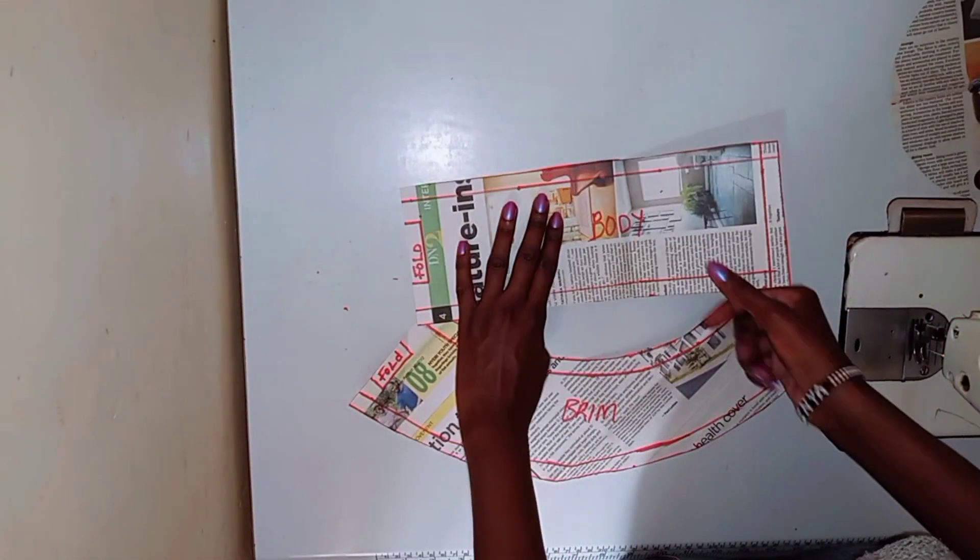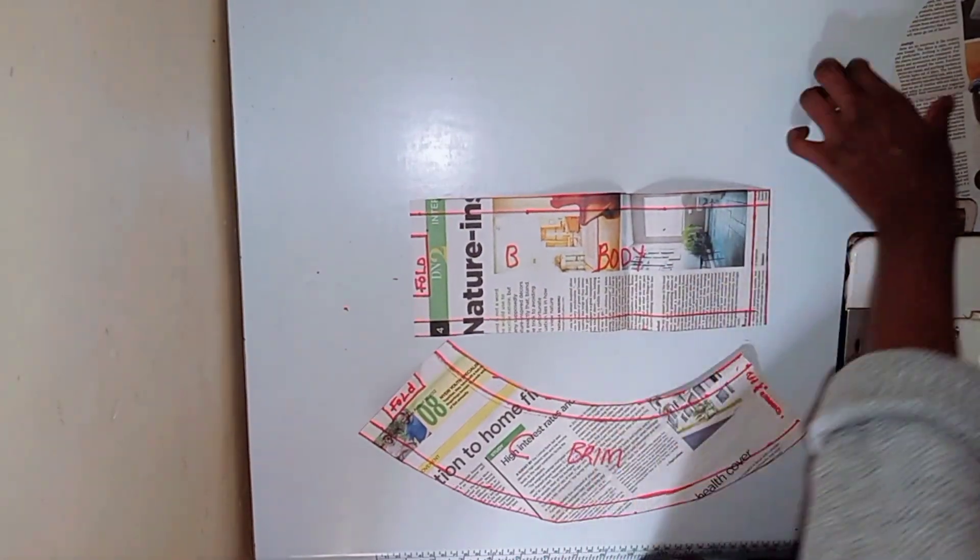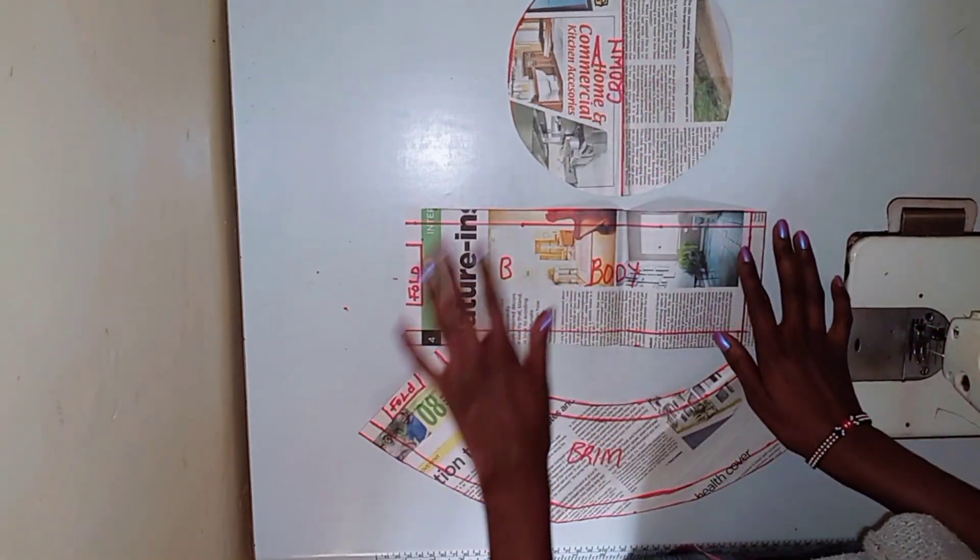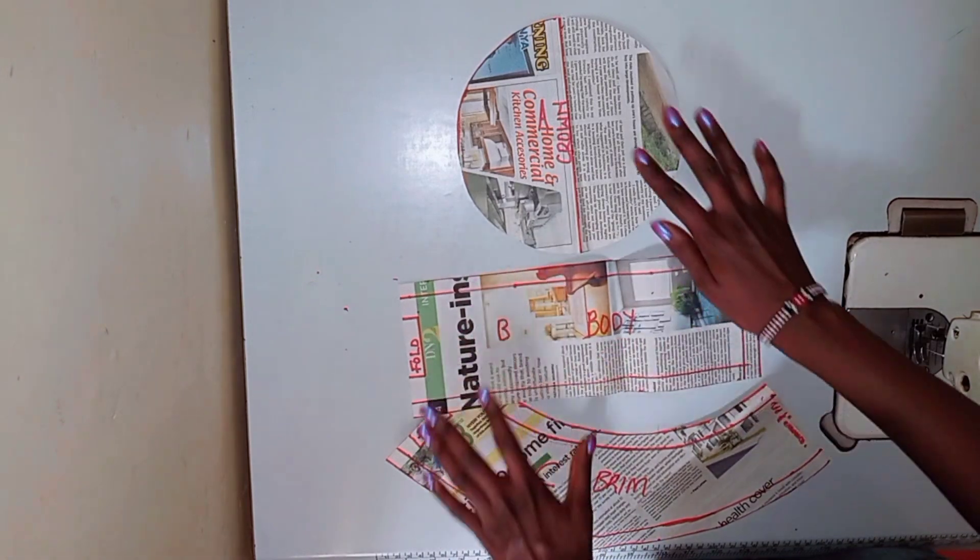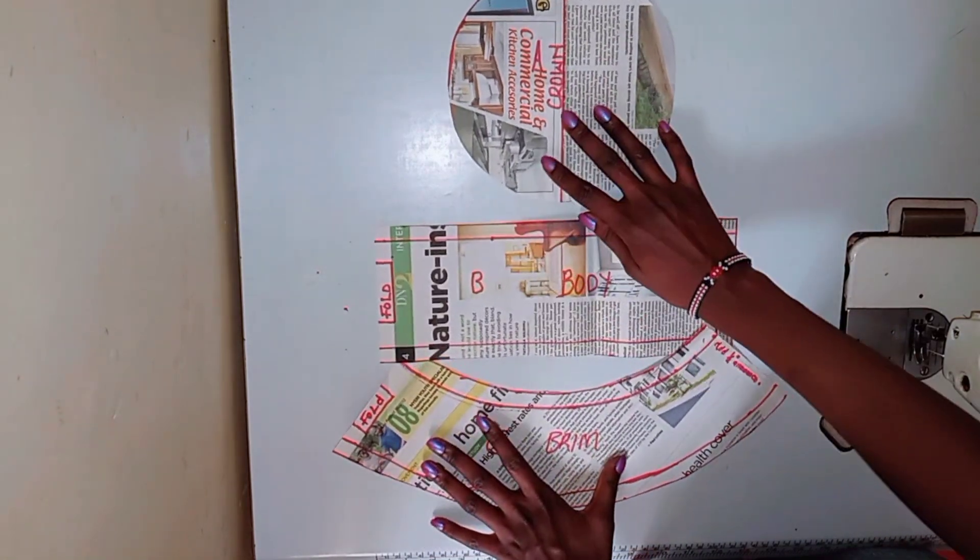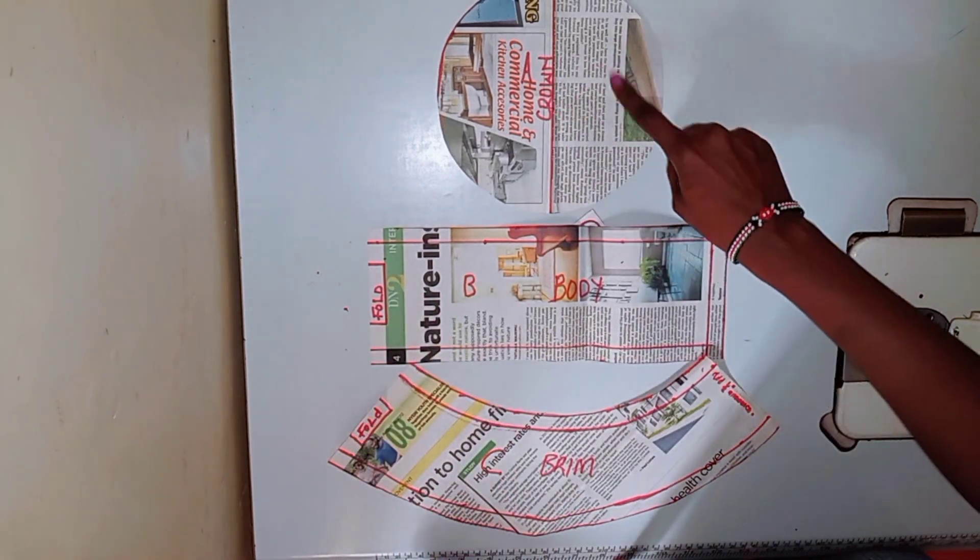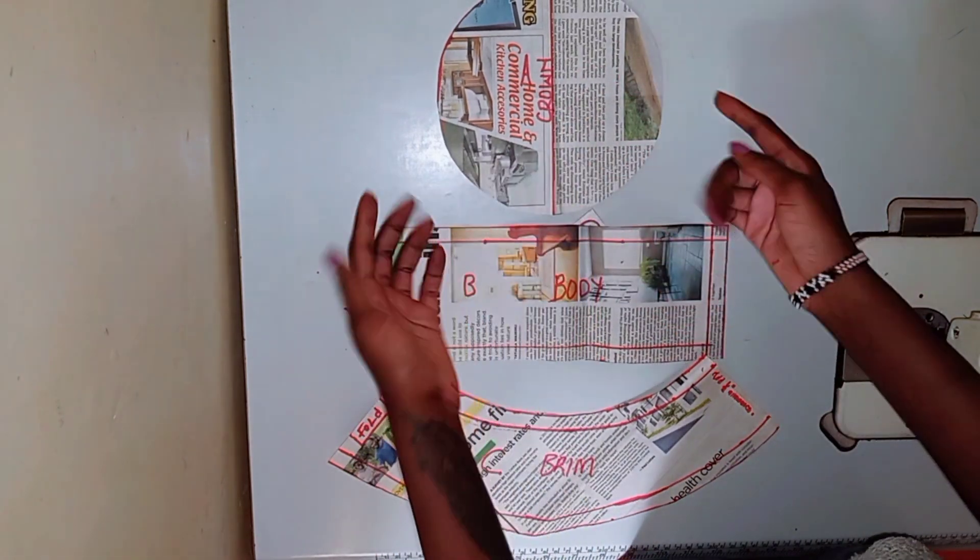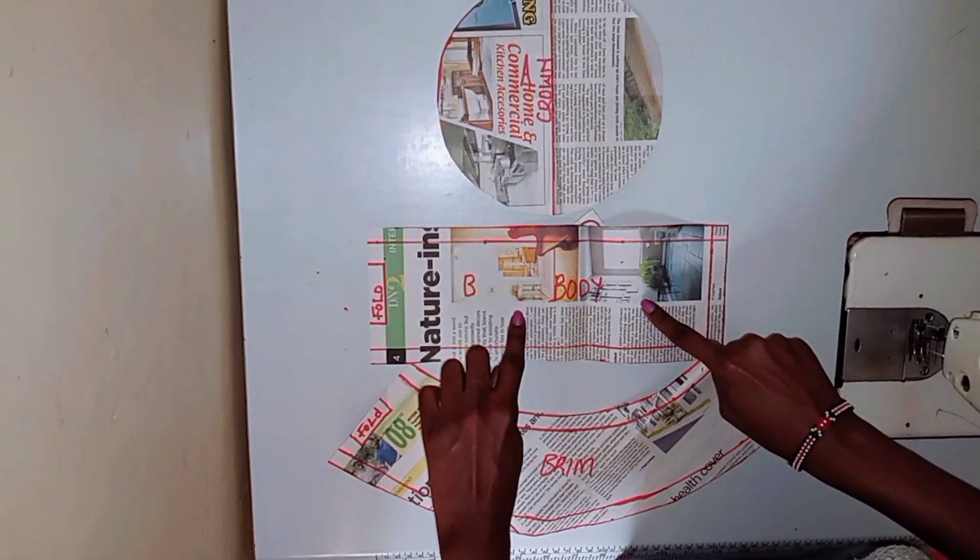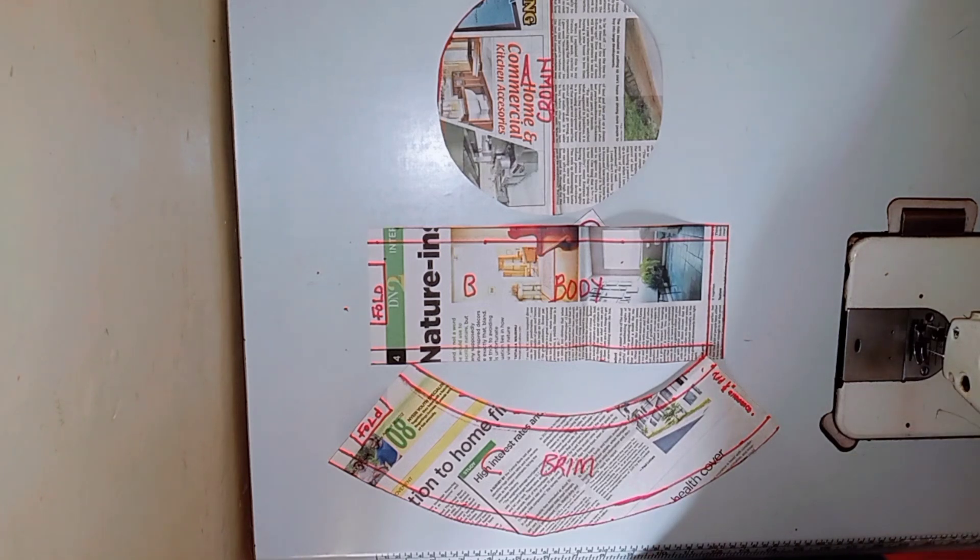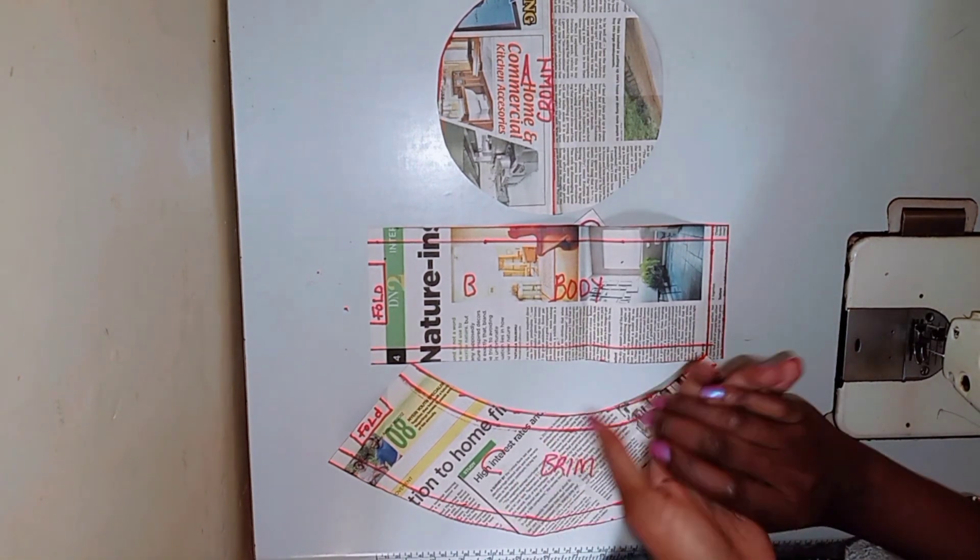Now you have three pieces. You should have the crown, you should have the body, and you should have the brim. As you can see, I have marked mine A, B, and C, and I have also marked them the crown, the body, and the brim. These pieces will form the template for your bucket hat. You can tape them on some cardboard if you want them sturdier so that you can use them multiple times or if you're making multiple hats.